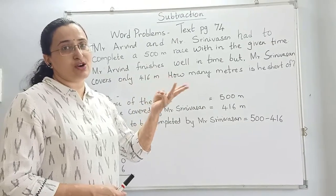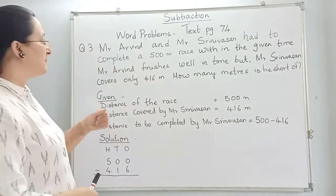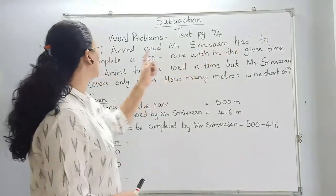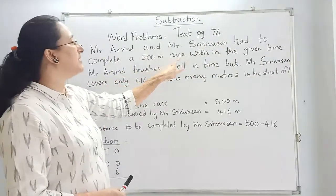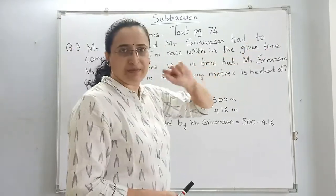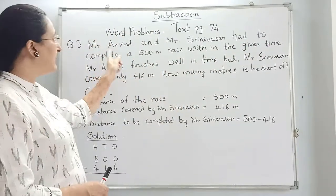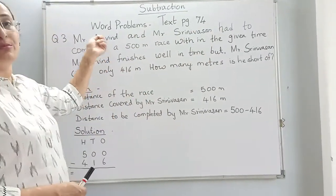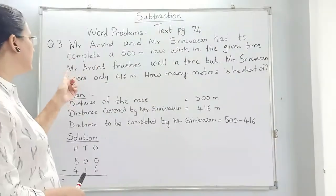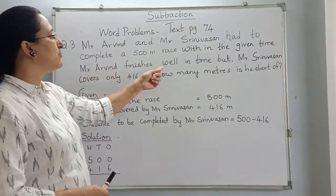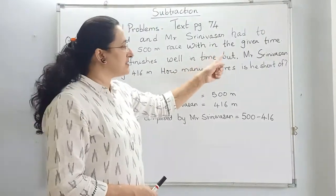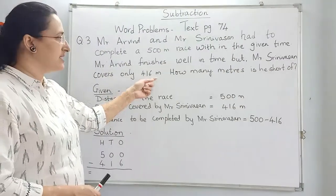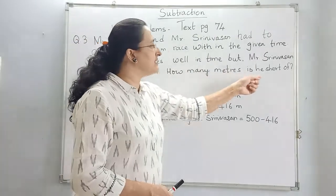Rita finds dog so cute. Let us read the sum. Mr. Arvind and Mr. Srinivasan had to complete a 500 meter race within the given time. Some time was allotted. Mr. Arvind finishes well in time but Mr. Srinivasan covers only 416 meters. How many meters is he short of?